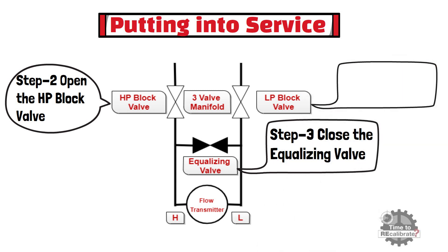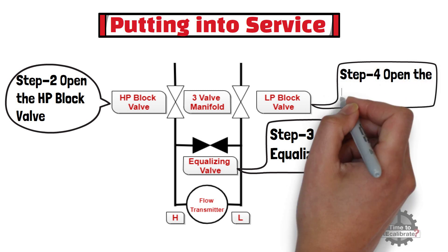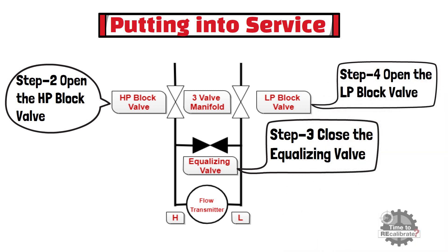In fourth and final step, open the LP block valve by rotating valve in counterclockwise direction. The transmitter will now be able to indicate the correct differential pressure between the high and low pressure taps, and transmitter is now considered to be in service.